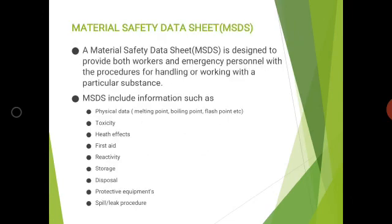The next topic is Material Safety Data Sheets (MSDS). These are designed to provide both workers and emergency personnel with procedures for how to handle and work with chemical materials. The MSDS includes information such as physical data — melting point, boiling point, flash point — as well as toxicity and health effects of that particular material.